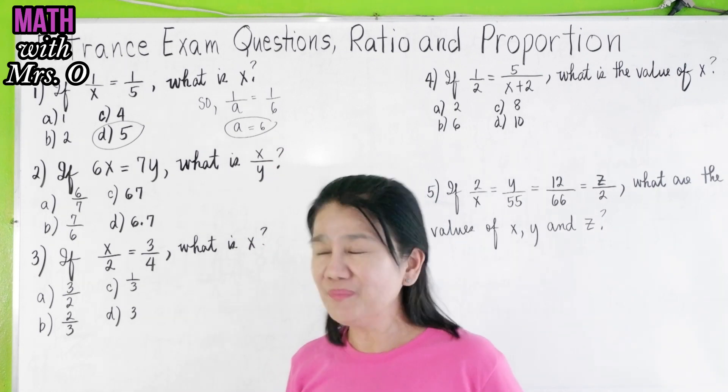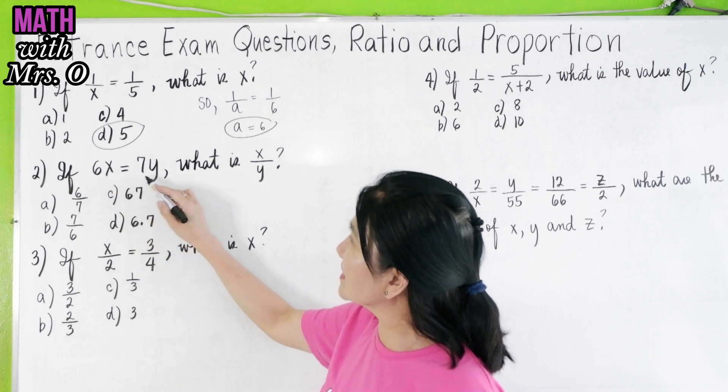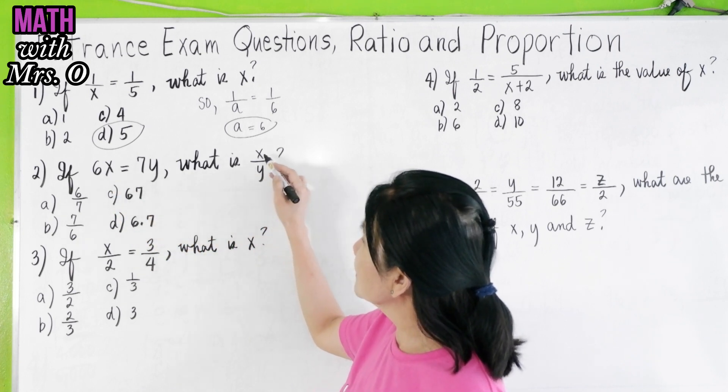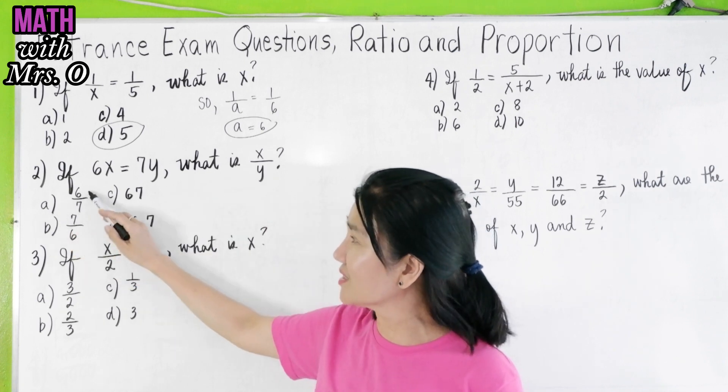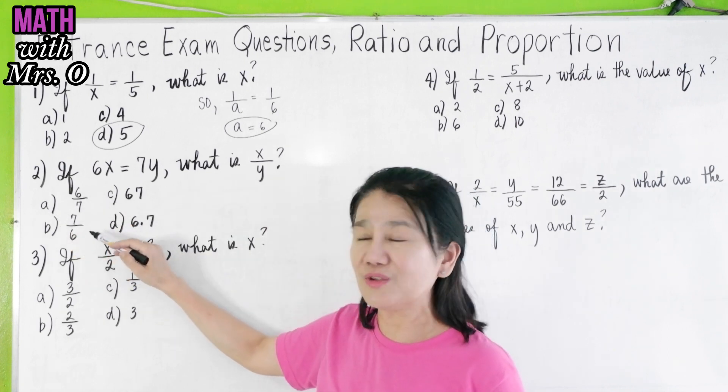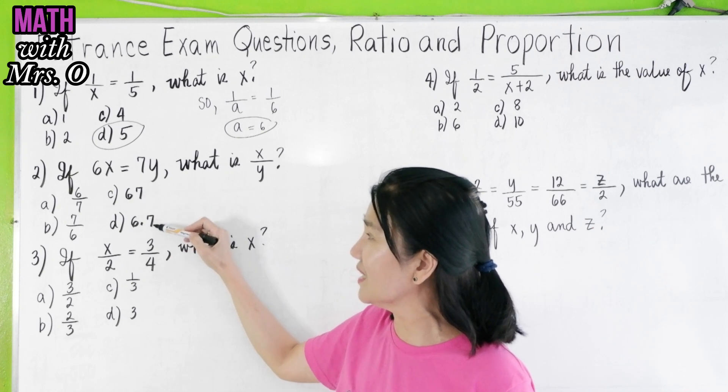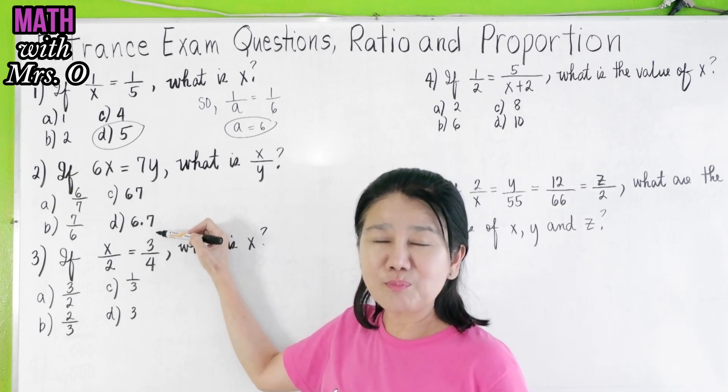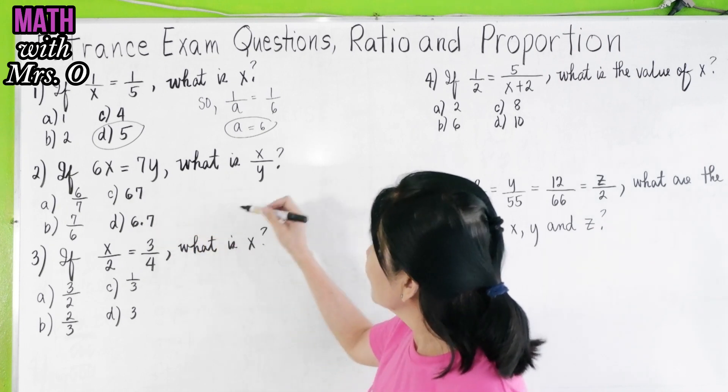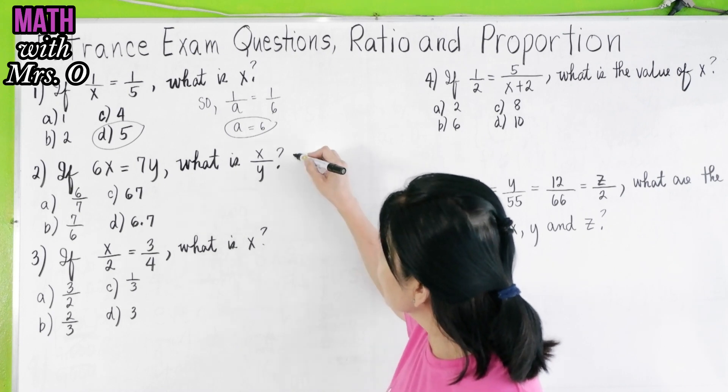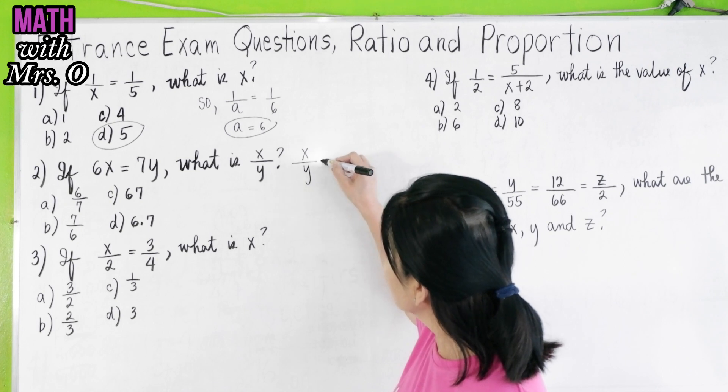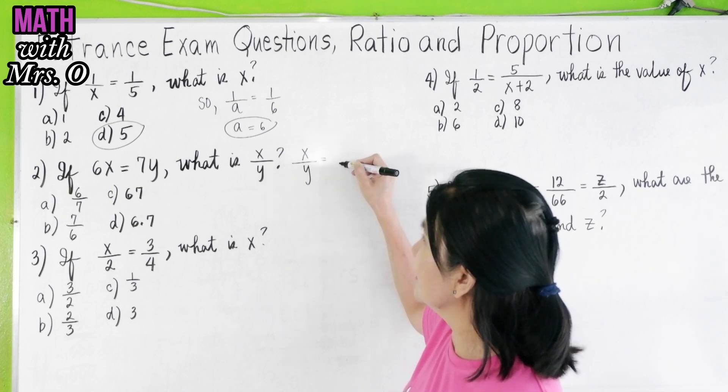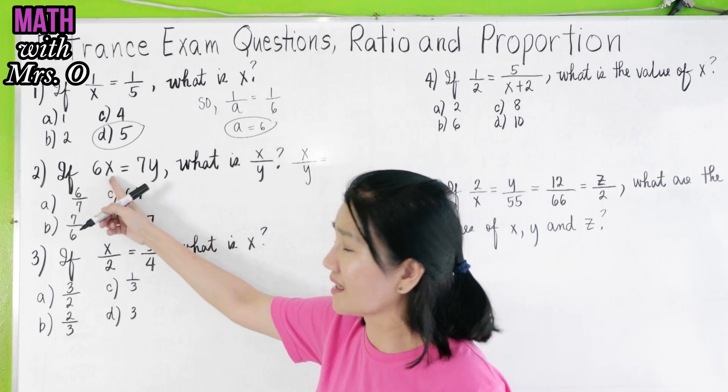Next, problem number 2. If 6x equals 7y, what is x over y? Letter a, 6 over 7. Letter b, 7 over 6. Letter c, 67. Letter d, 6.7. Now, how do you solve this? X over y equals lambda. You have here 6x. Remember, this is 6x.